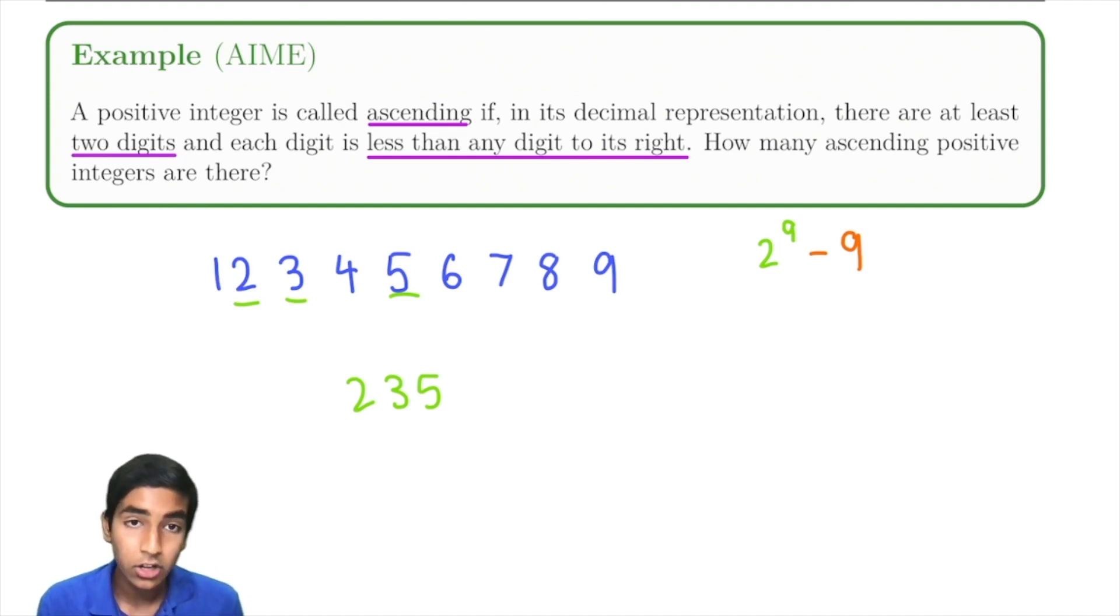The empty set, which basically means no numbers are chosen, is part of our 2 to the 9. But it's not part of what our condition is asking. So we subtract an additional one. And then this was their answer: 512 minus 10 equals 502.